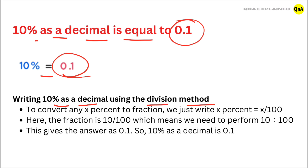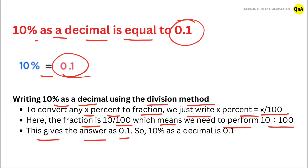To convert any x% to a decimal, we write x% is equal to x divided by 100. Here the fraction is 10 divided by 100, which gives the answer 0.1. So 10% as a decimal is 0.1.